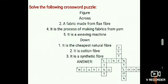Let us solve the crossword puzzle. A fabric made from flax fiber — linen. The process of making fabrics from yarn — weaving. A weaving machine — loom. The cheapest natural fiber — jute. Cotton fiber — lint. A synthetic fiber — nylon.